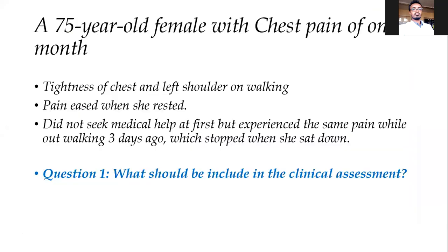This is a case: a 75-year-old female who presented with chest pain of one month's duration. The patient characterized it as tightness of chest and left shoulder on walking. The pain eased when she rested. She did not seek medical help at first, but she experienced the same pain while walking three days ago, and it was reproducible. So the first question is: what should be included in the clinical assessment of this patient?